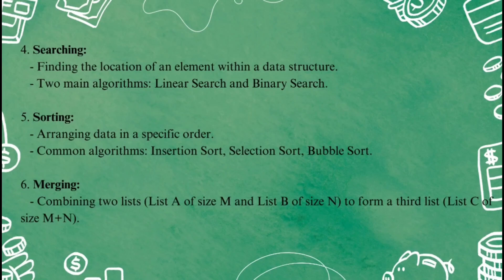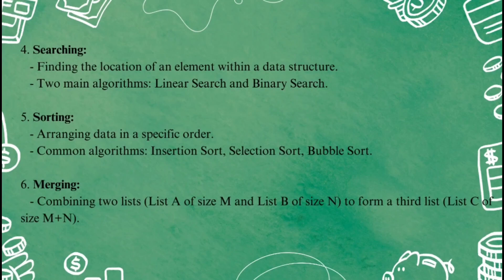Next is sorting — when you arrange data in a specific order, either ascending or descending. Sorting helps make data easier to search or analyze. Common sorting algorithms include insertion sort, selection sort, and bubble sort. Finally, merging — this operation combines two separate lists into one larger list. If list A has m elements and list B has n elements, merging them gives you a new list of m plus n size.